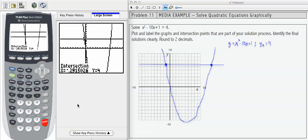It gives me the left side intersection, which is negative 0.29 comma 4, if I go with just a couple of decimals.